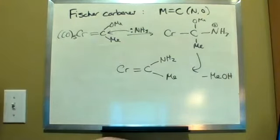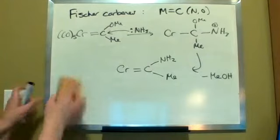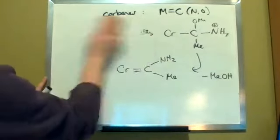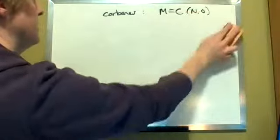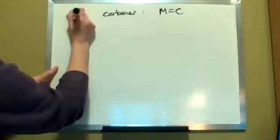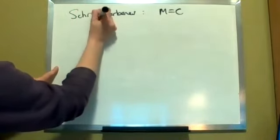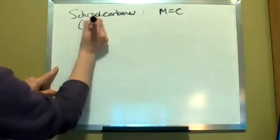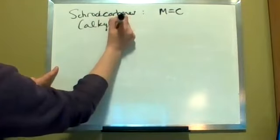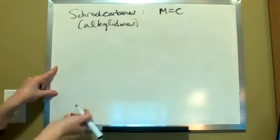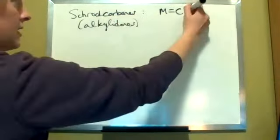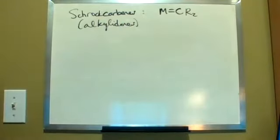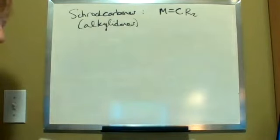Moving on to the next one, now these are the alkylidenes or Schrock carbenes. Now I'm talking Schrock, also known as alkylidenes, because it's bound - it's going to be some form of alkyl, another carbon bond, two different carbons bonded right there.